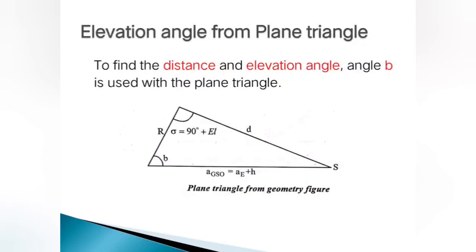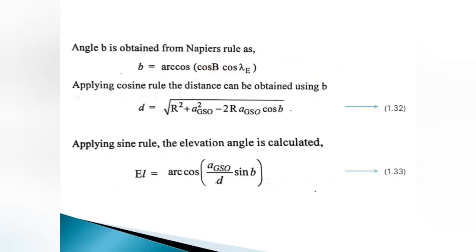To find the elevation angle, the plane triangle is used. Angle small b, obtained from Napier's rule, is used with the plane triangle. The range value d and the elevation angle are calculated using the formulas derived from this plane triangle geometry.